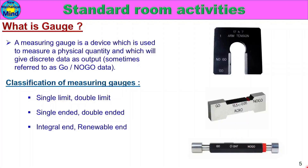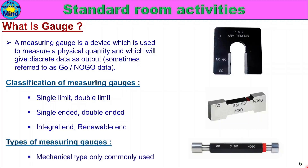Types of Measuring Gauges. The most commonly used measuring gauge type is the mechanical type.